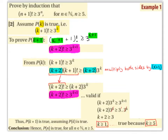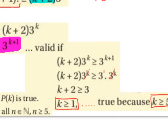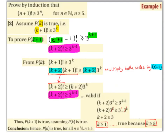Now 3^(k+1) can be rewritten as 3^1 × 3^k, since 1+k = k+1. So we have (k+2) × 3^k ≥ 3 × 3^k. Cancelling 3^k from both sides leaves k+2 ≥ 3, therefore k ≥ 1. This is true because we know k ≥ 5.